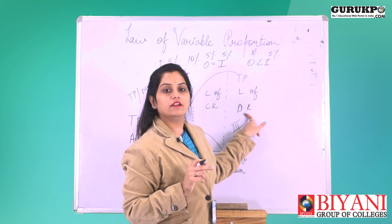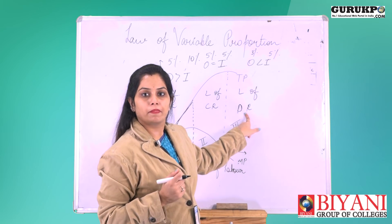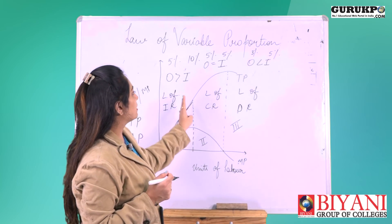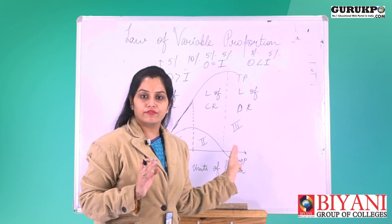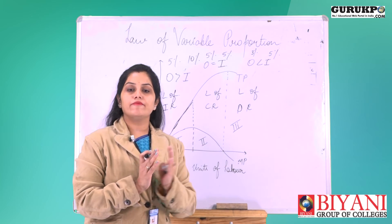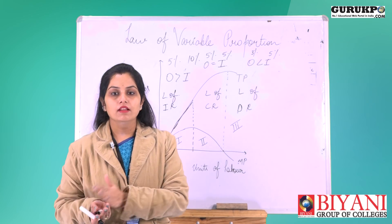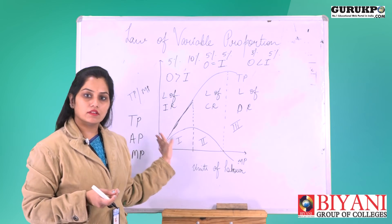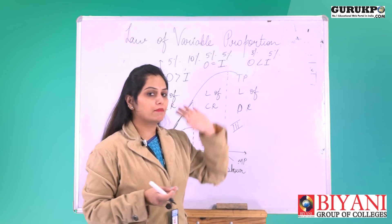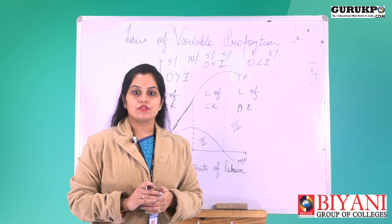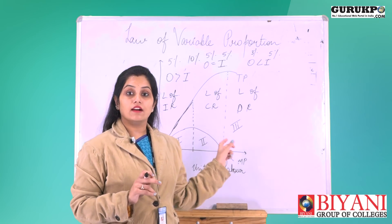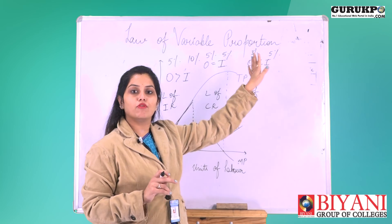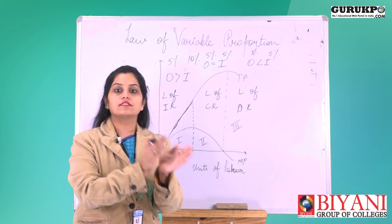This is all about the law of variable proportion. We keep some factors fixed and the rest variable, and the changes in output with the change in inputs result in the three stages of the law of variable proportion. The term 'variable proportion' refers to the ratio of the fixed factor to the variable factor.